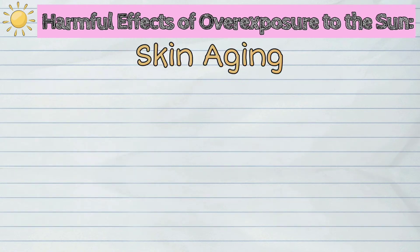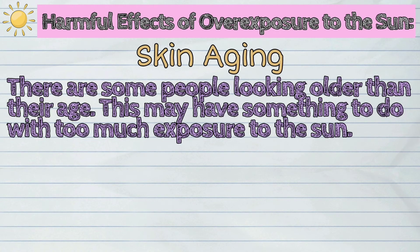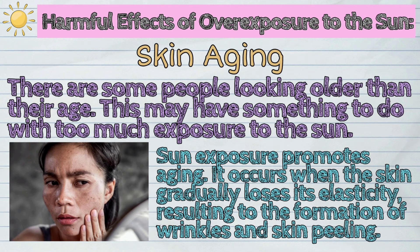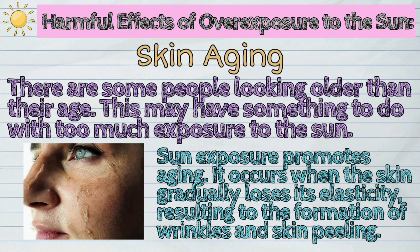And the third one is skin aging. There are some people looking older than their age. This may have something to do with too much exposure to the sun. Sun exposure promotes aging. It occurs when the skin gradually loses its elasticity, resulting in the formation of wrinkles and skin peeling.